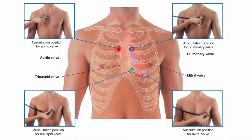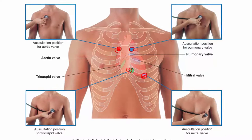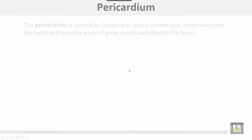The mitral valve is auscultated in the fifth intercostal space, coincident with the apex of the heart. The tricuspid valve is auscultated at the lower part of the sternum.